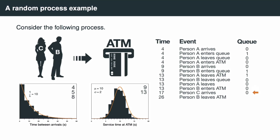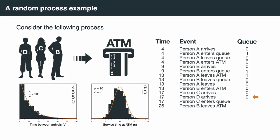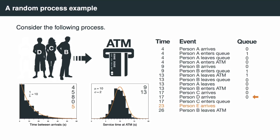The simulation model moves on to the point where Person C arrives at time 17. This triggers another draw from the exponential distribution, which in this case draws the value 0, meaning Person D also arrives at time 17. Person C arriving also triggers Person C entering the queue as an event. The model then moves to Person D arriving, which triggers a new event for Person E to arrive 5 seconds later at time 23. This gets chronologically added and sorted in the list. Person D arriving also triggers Person D entering the queue.